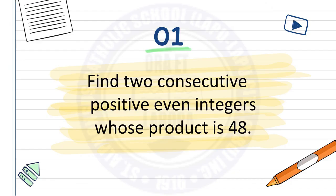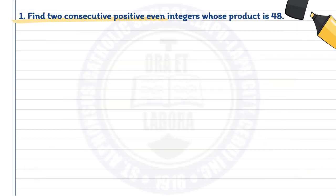Example number 1: Find two consecutive positive even integers whose product is 48.